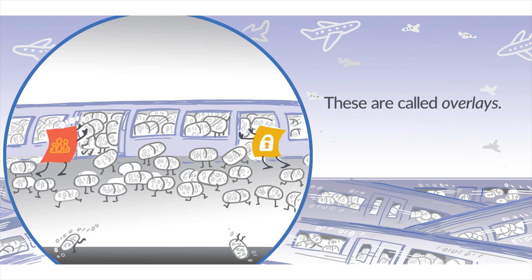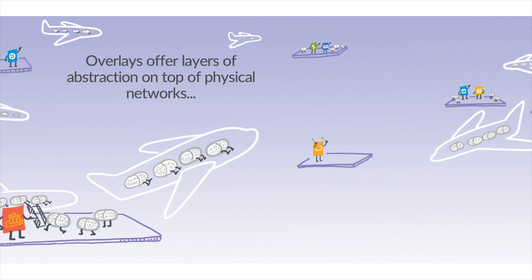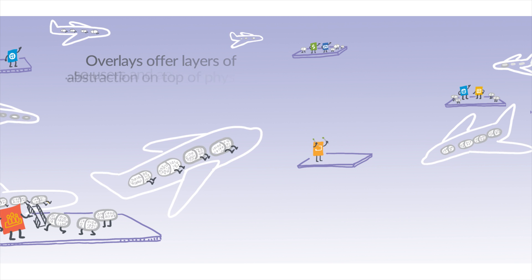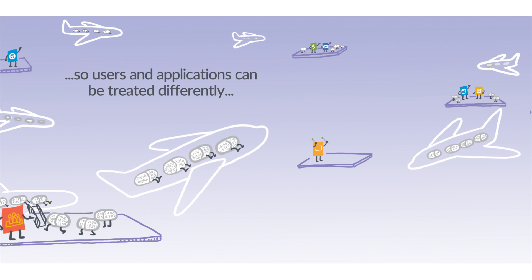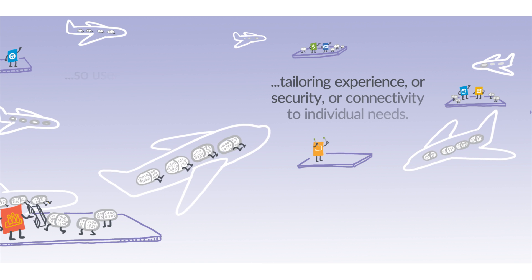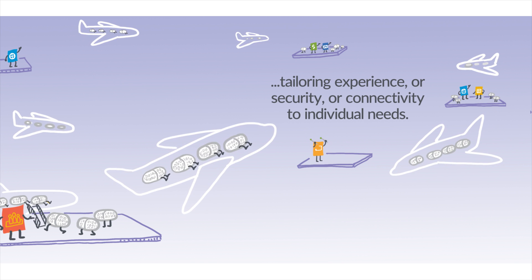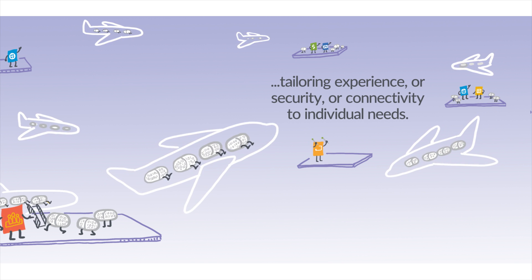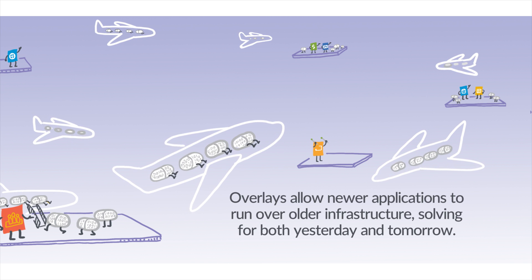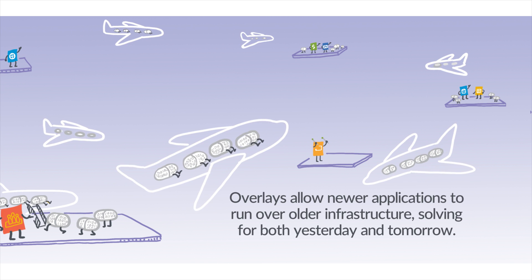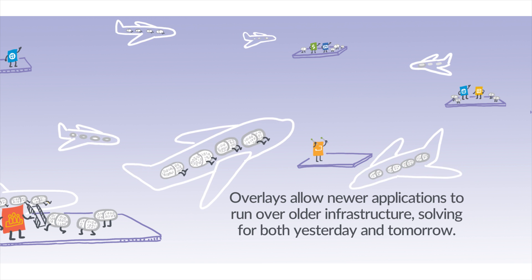These are called overlays. Overlays offer layers of abstraction on top of physical networks, so users and applications can be treated differently, tailoring experience or security or connectivity to individual needs. Overlays allow newer applications to run over older infrastructure, solving for both yesterday and tomorrow.